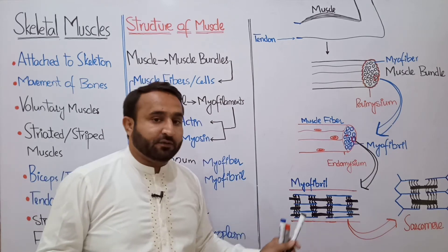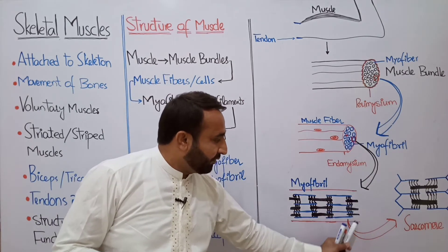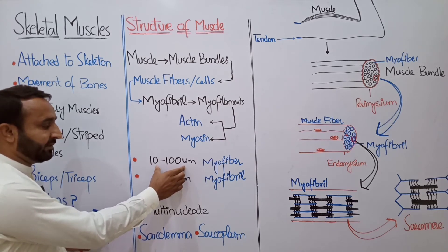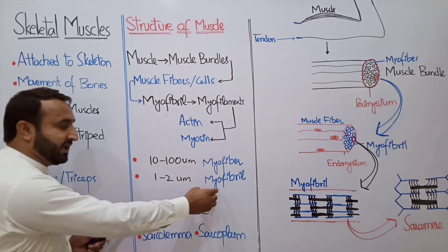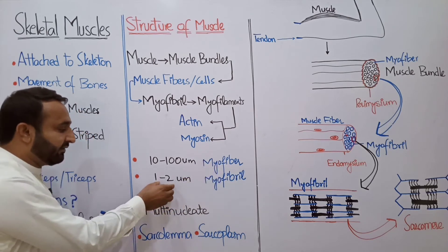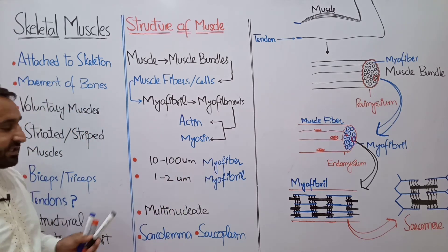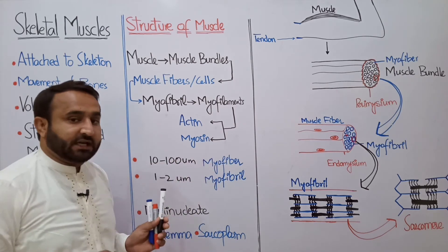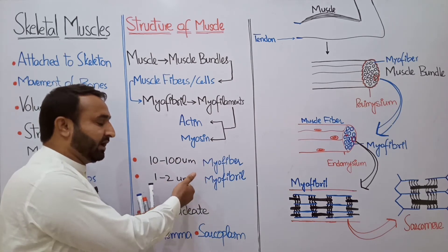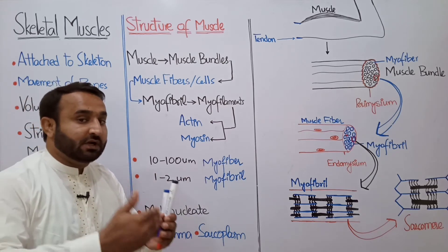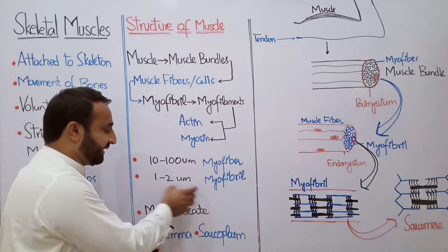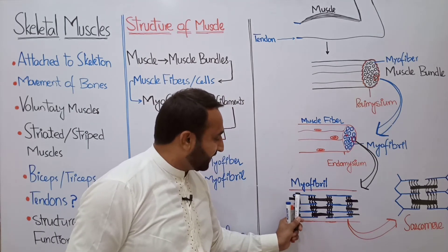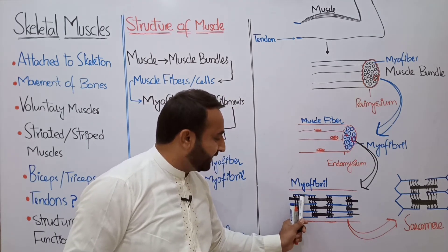The diameter of a muscle fiber (myofiber) is 10 to 100 micrometers, while the diameter of one myofibril is 1 to 2 micrometers. So if a muscle fiber has a diameter of 100 micrometers, it can contain almost 50 to 100 myofibrils, because each myofibril is 1 to 2 micrometers in diameter. Inside myofibrils we look at myofilaments.